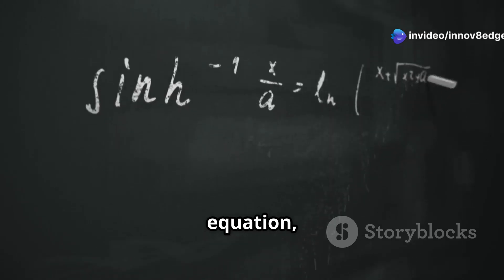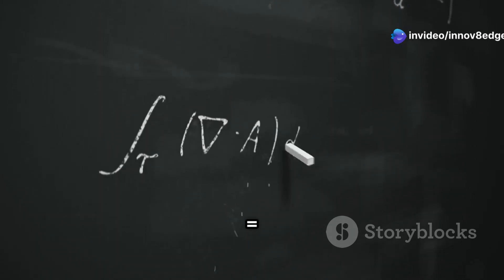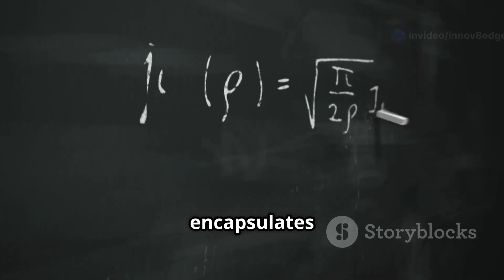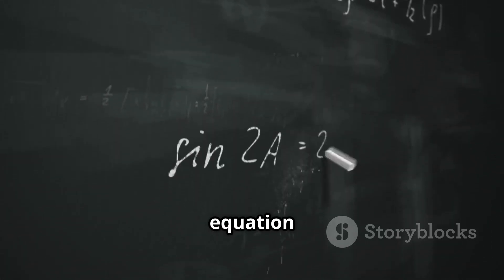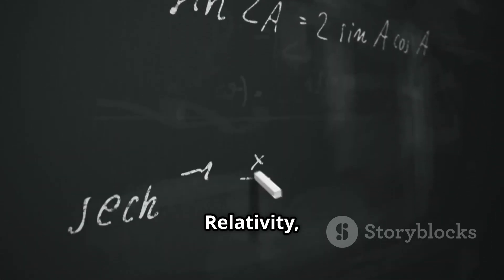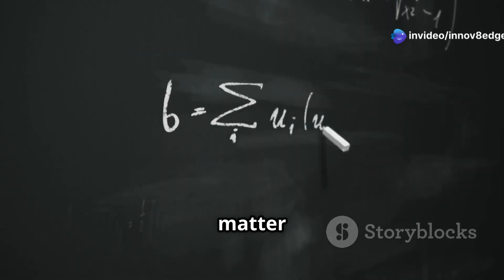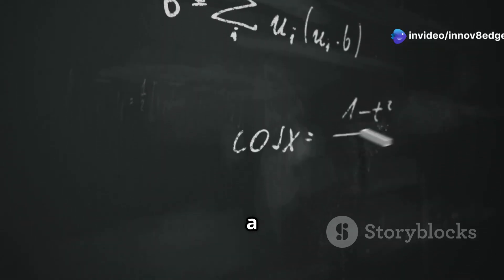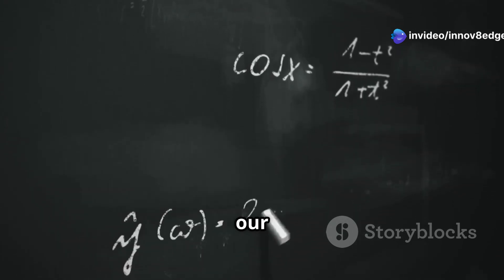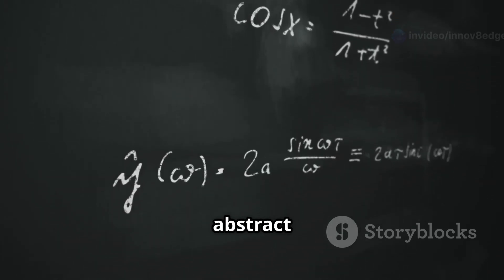Einstein's famous equation, G_MN plus Λ G_MN equals 8πG/c^4 T_MN, encapsulates this beautifully. This equation is a cornerstone of general relativity, succinctly relating the geometry of space-time to the distribution of matter and energy within it. It is a profound statement about the nature of our universe, linking the abstract mathematical world with the tangible physical reality.